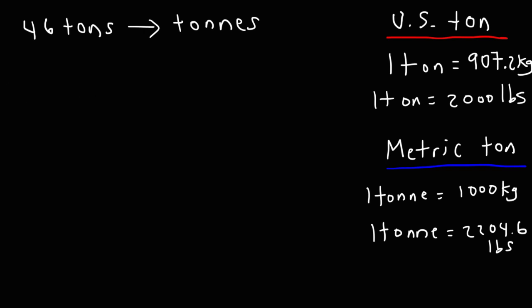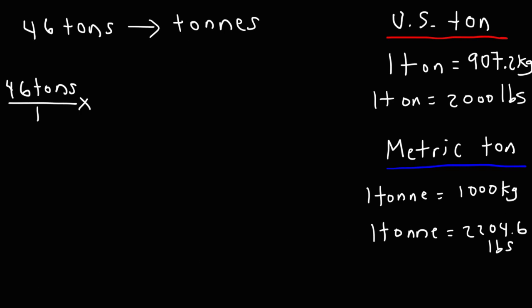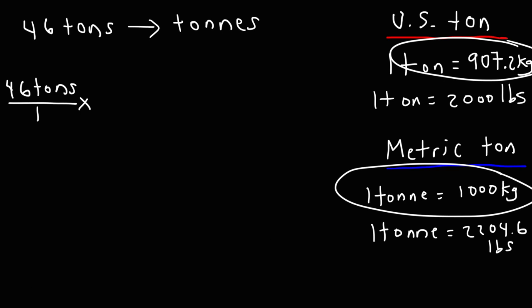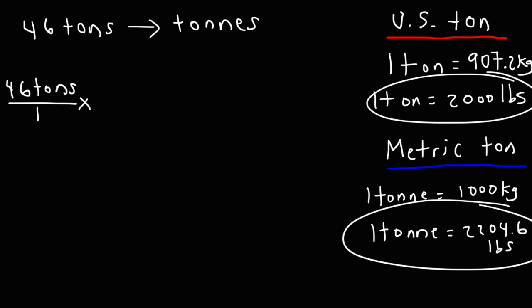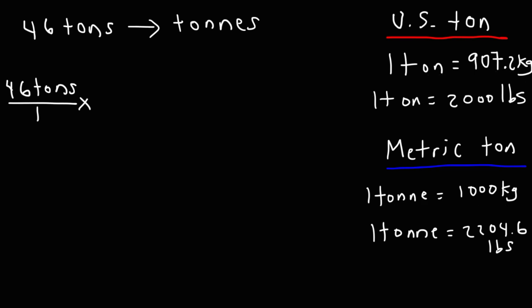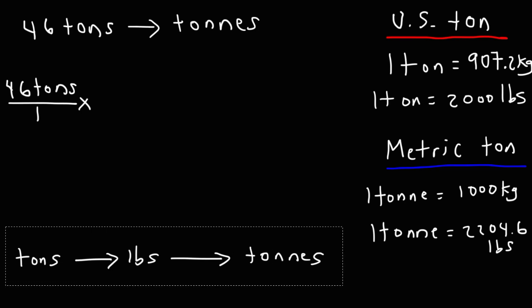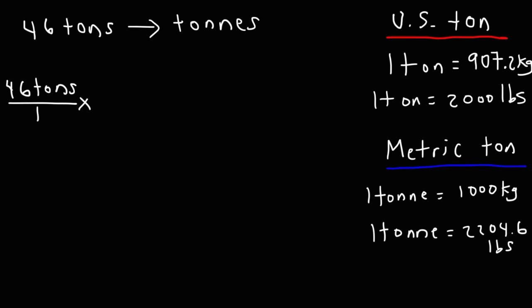Let's begin. Start with what we're given: 46 tons over 1. We don't have a direct conversion from U.S. tons to metric tons, so we'll go through an intermediate step. We can convert tons to pounds and then pounds to metric tons. So we'll take the U.S. ton, convert it into pounds, and then convert pounds into metric tons. You can look up a direct conversion online, but we'll use the conversion factors we have.